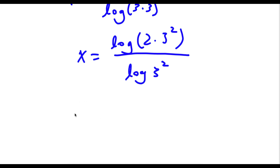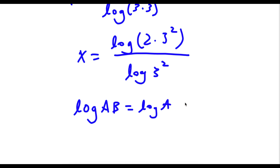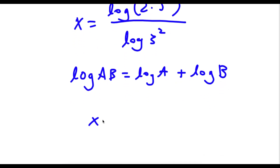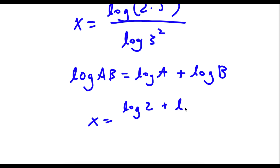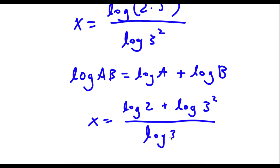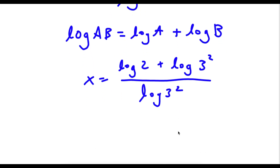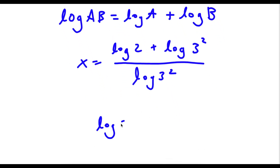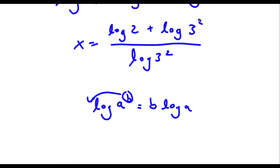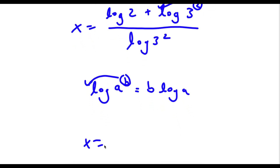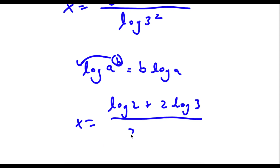Now if I have something in the form log a times b, this is the same thing as log a plus log b. So in this case, I have log of 2 times 3 squared in the numerator, so this is going to equal log 2 plus log 3 squared. And I have this over log 3 squared. Applying the power rule, log 3 squared becomes 2 log 3. So I have log 2 plus 2 log 3 over 2 log 3.